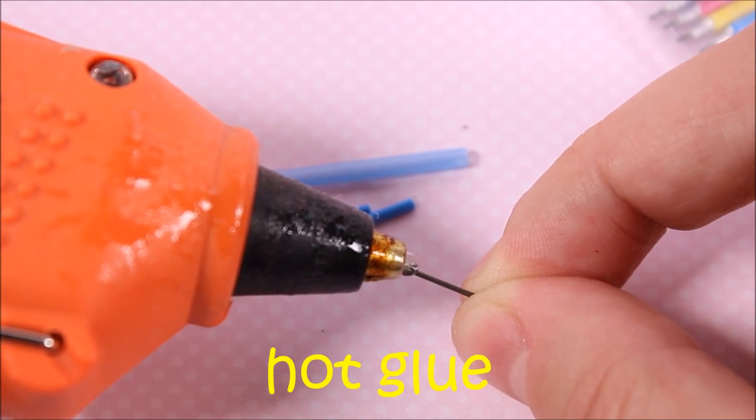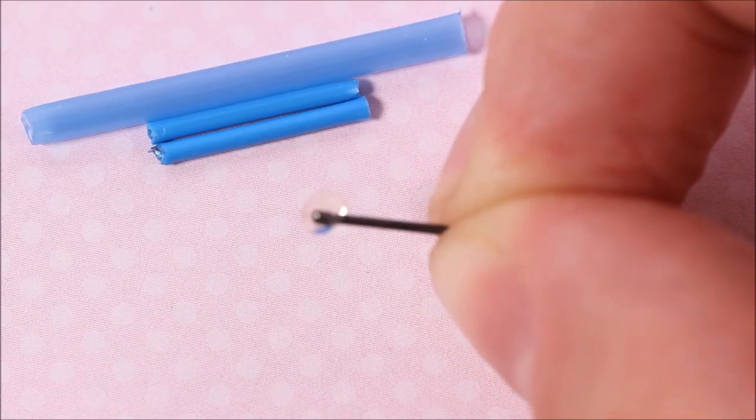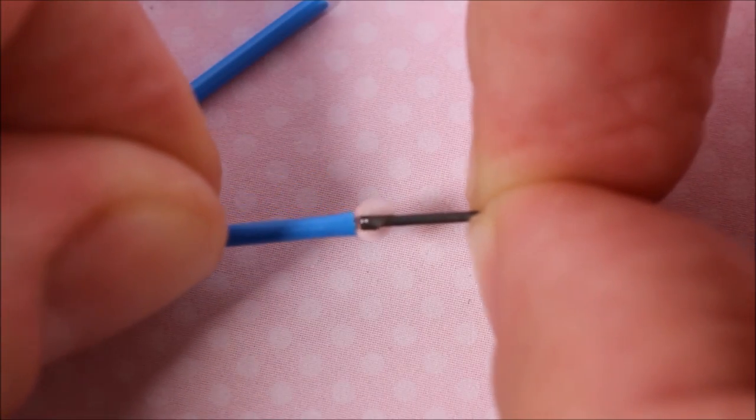Using the hot glue, glue the pieces together. First glue the piece of the microcarbon into the piece of the plastic.